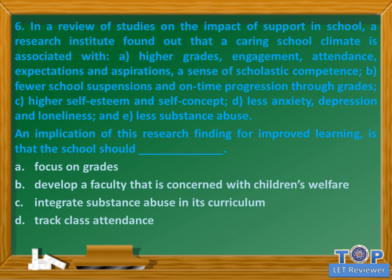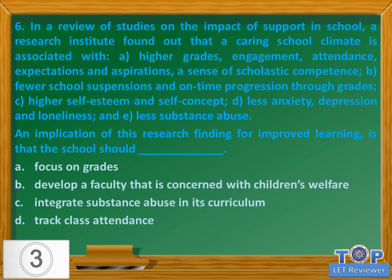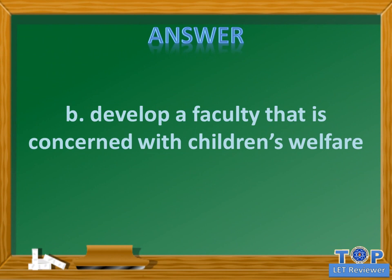Question number six: a research institute found that a caring school climate is associated with higher grades, engagement, attendance, expectations and aspirations, a sense of scholastic competence, fewer school suspensions and on-time progression through grades, higher self-esteem and self-concept, less anxiety, depression and loneliness, and less substance abuse. An implication for improved learning is that the school should: A) focus on grades, B) develop a faculty concerned with children's welfare, C) integrate substance abuse in its curriculum, D) track class attendance. Answer: B) develop a faculty that is concerned with children's welfare.